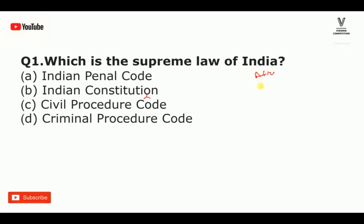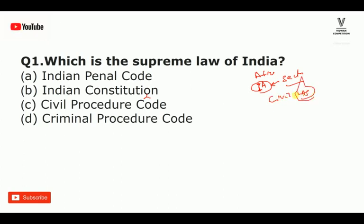And the Highest Civil Servant is the Secretary of the Cabinet. Civil Service means IAS. The Cabinet Secretary is an IAS officer. So the highest civil officer is the Cabinet Secretary, and the highest law officer is the Attorney General.